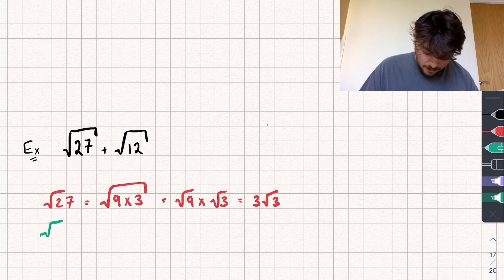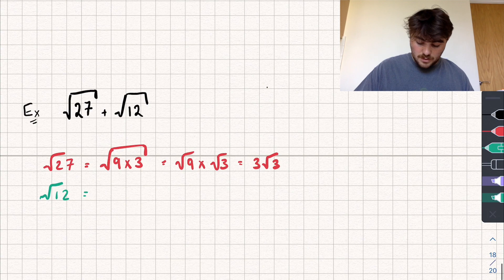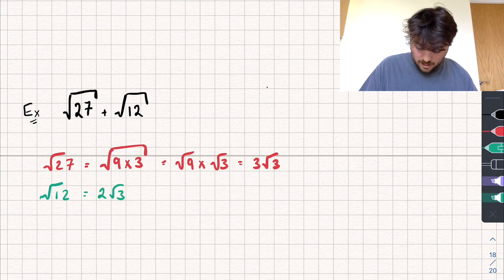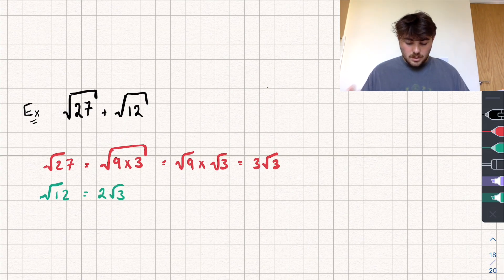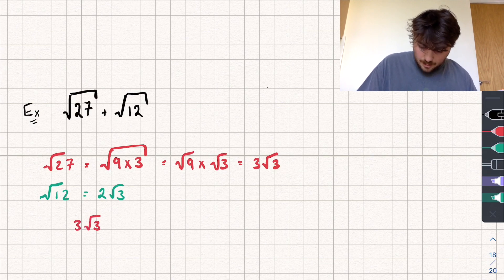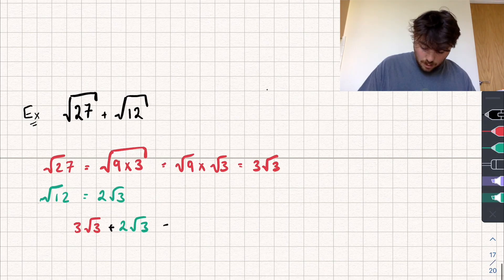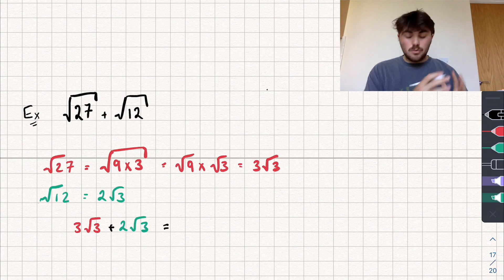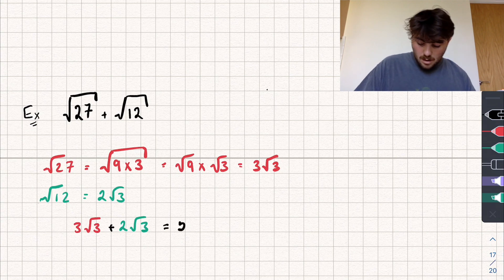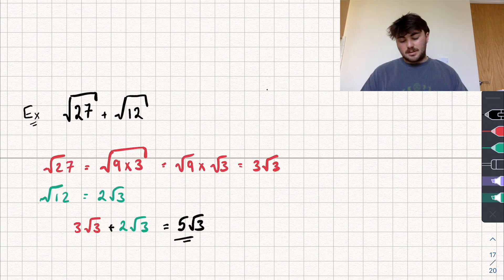For the square root of 12, we already answered it: that's 2√3. So the question is asking us to add these: √27 was 3√3, and √12 was 2√3. If I have 3 root 3s and I add another 2 root 3s, how many do I have in total? I would have 5√3. So the answer to that question is 5√3.